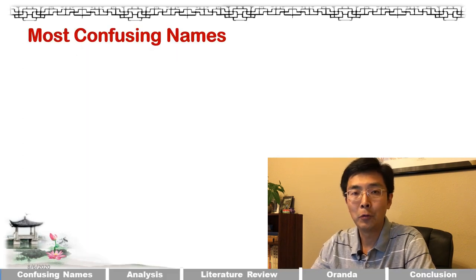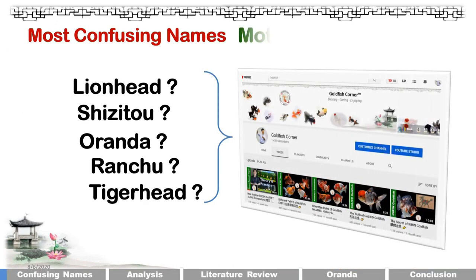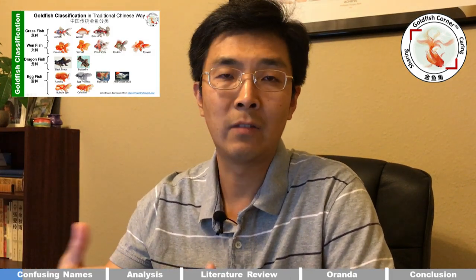Lionhead and oranda goldfish have many confusing terms. 'Lionhead' is one name; sometimes you hear 'shizitou,' 'oranda,' 'ranchu' — all those names actually motivated me to create this channel. My initial goal was to talk about these concepts. So far I've covered Chinese goldfish classification, what is 'wen' (goldfish head growth), wen's origin, and goldfish naming conventions. And then the history of ranchu.